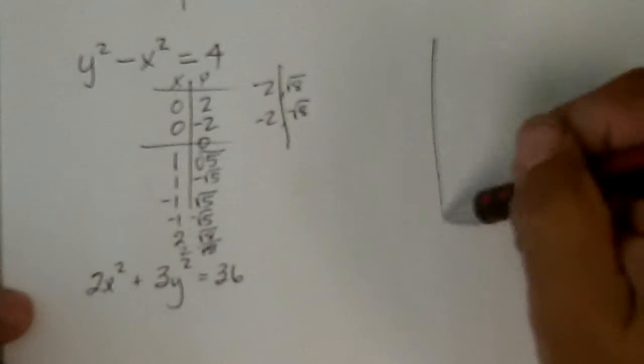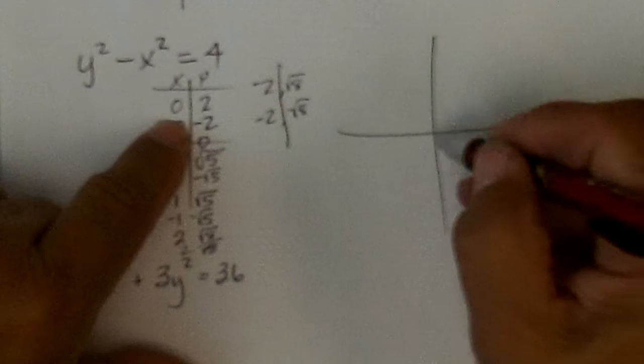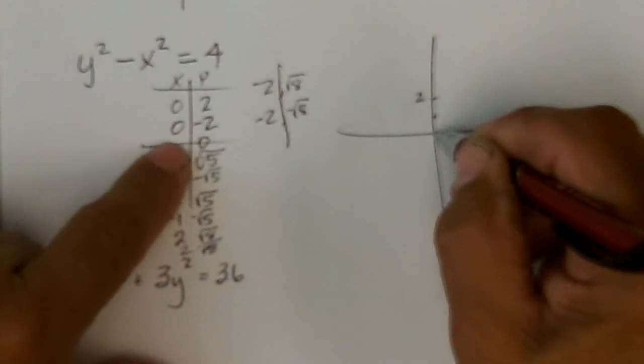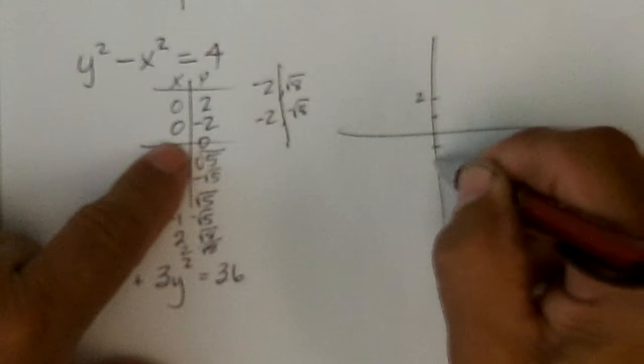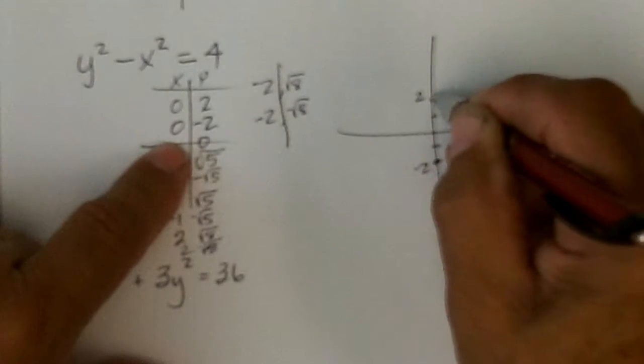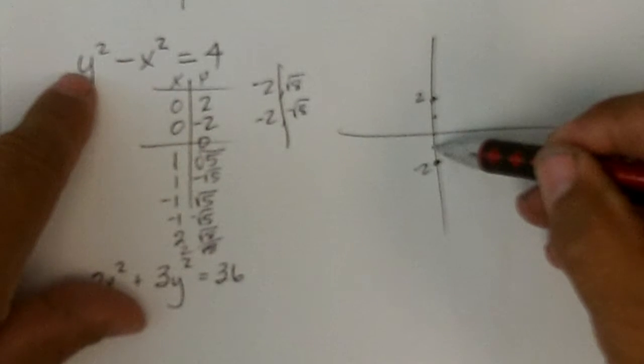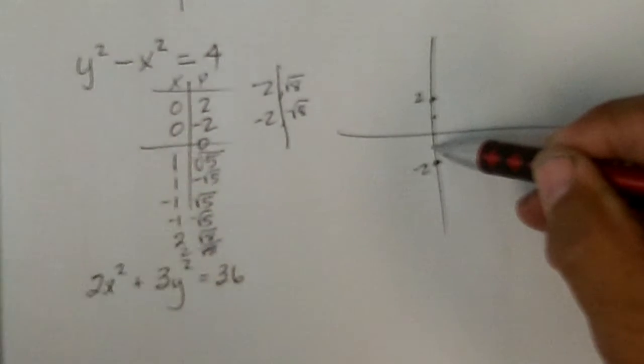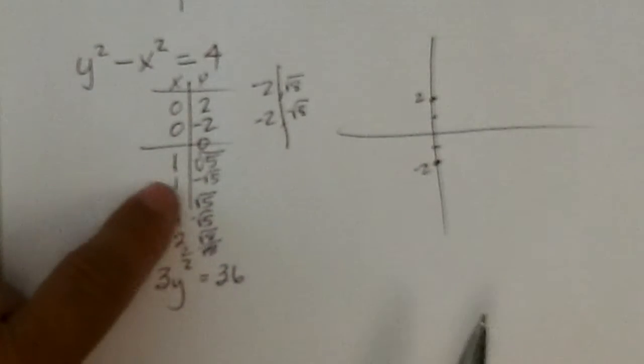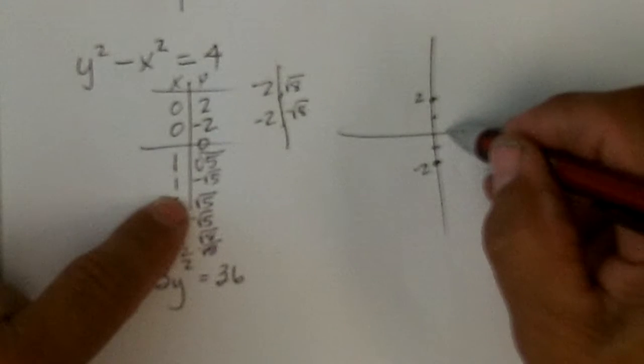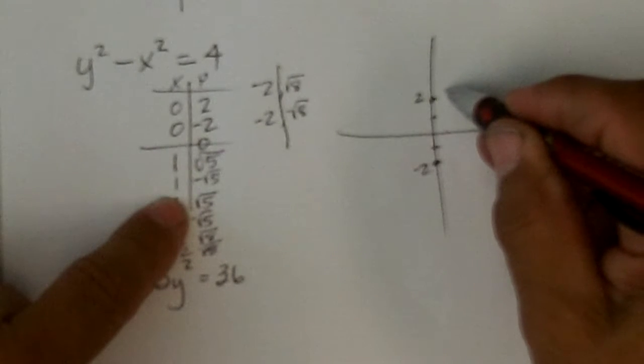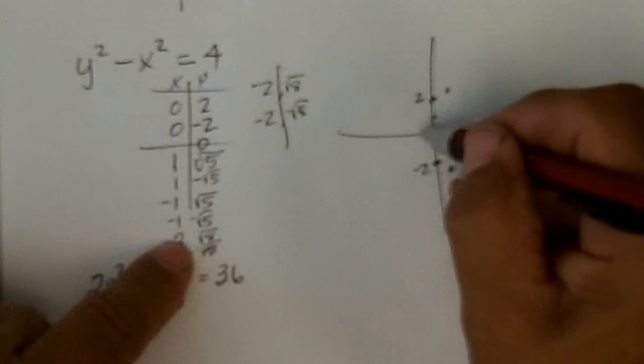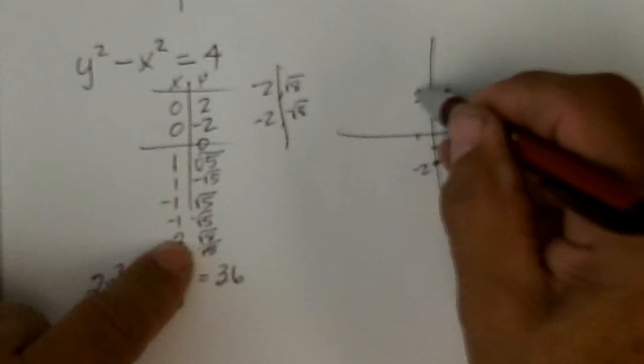All right. So, let's now put on what we do know so far. We get 0, 2, and 0, negative 2. And so, that's symmetric with the x-axis. And that's because it doesn't care what y is positive or negative. Okay. If we put in 1, we get the square root of 5, which is 2 point something. And negative square root of 5. But, we also get that for negative 1. Those same values.